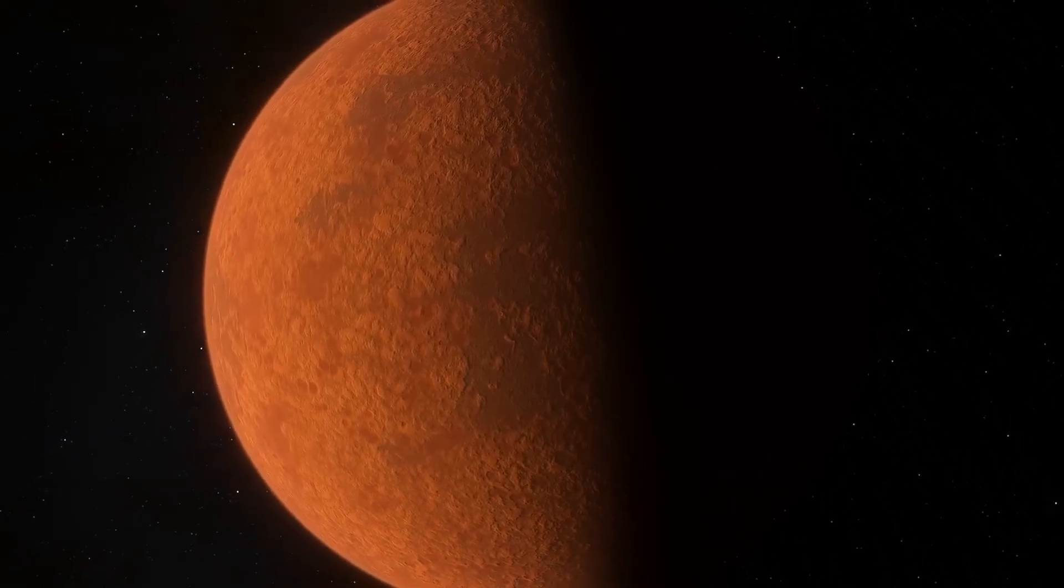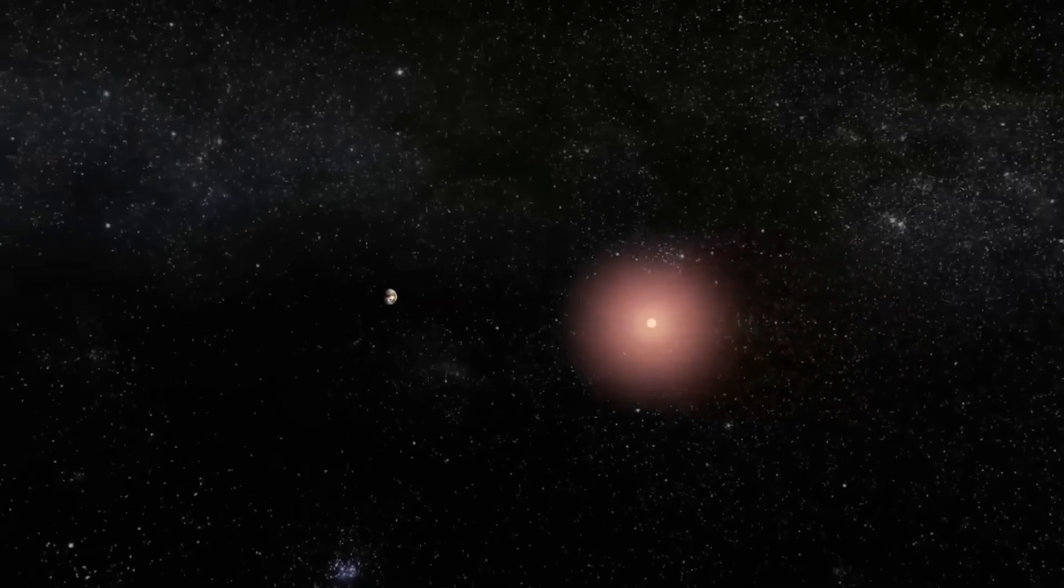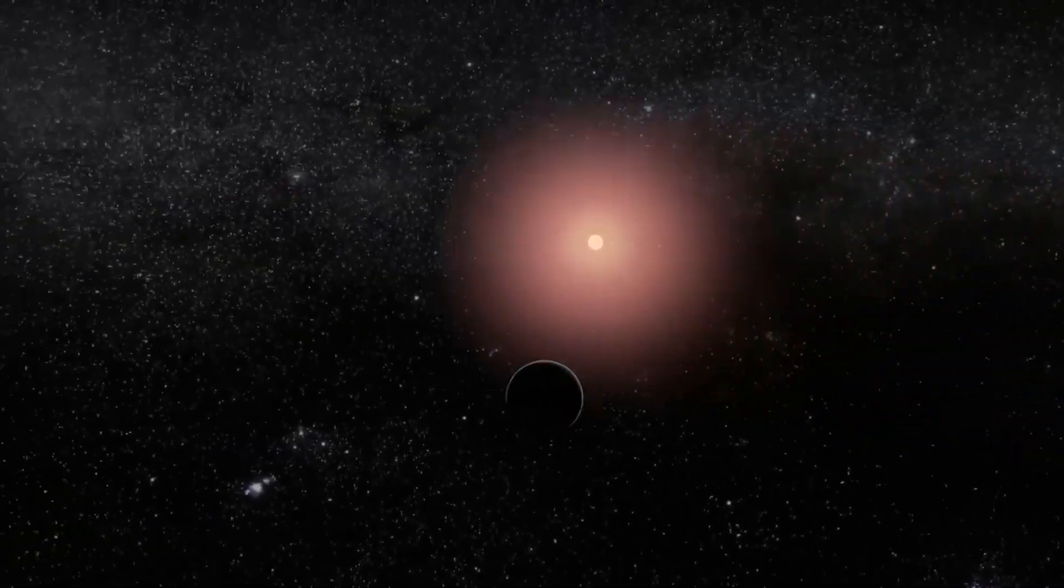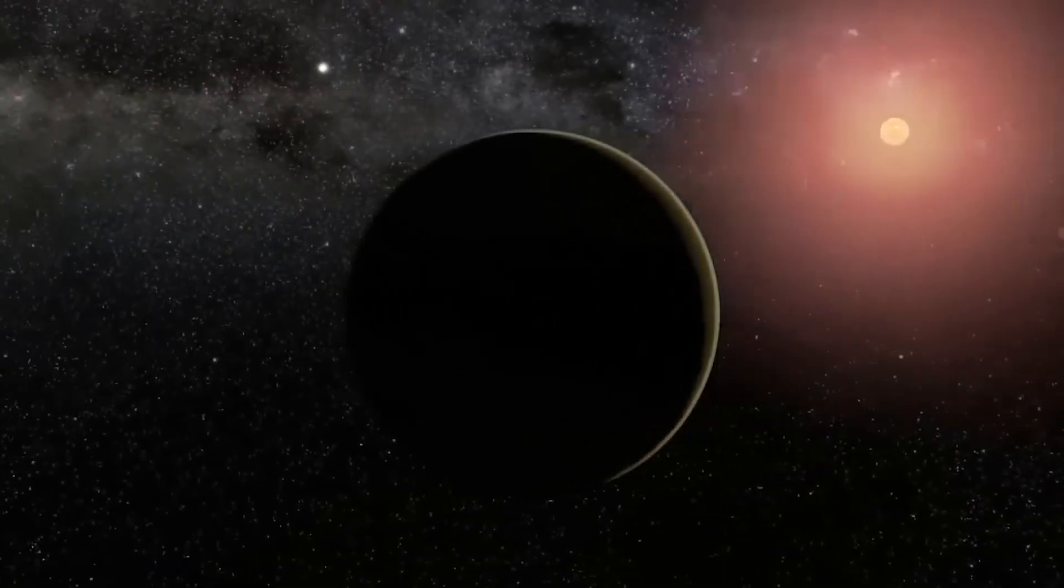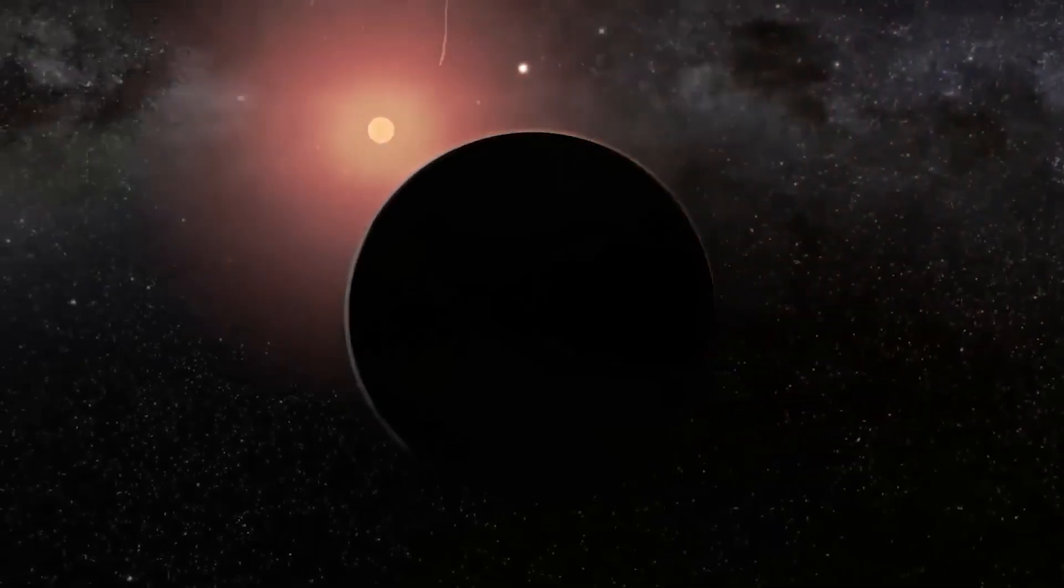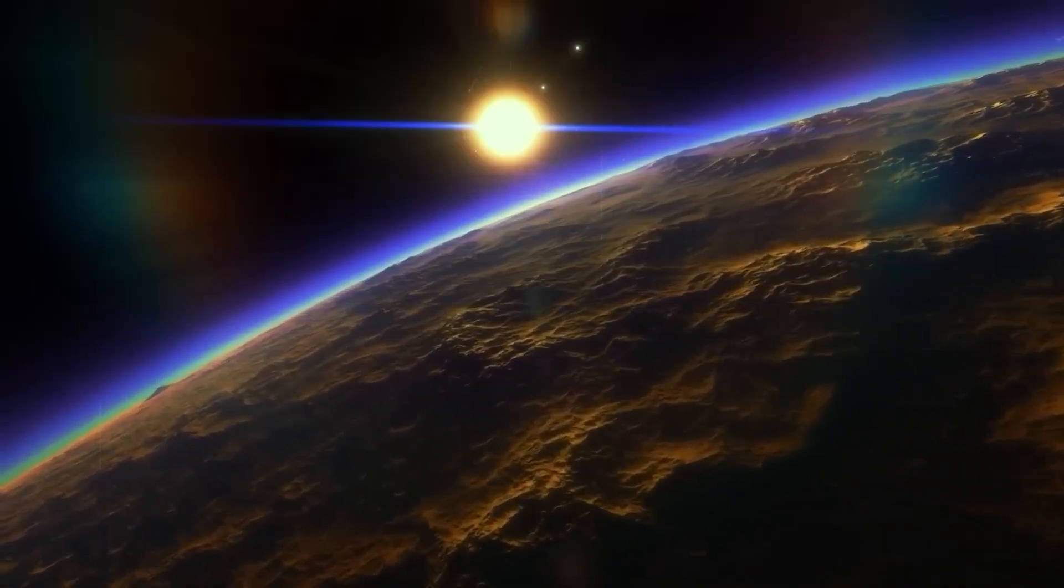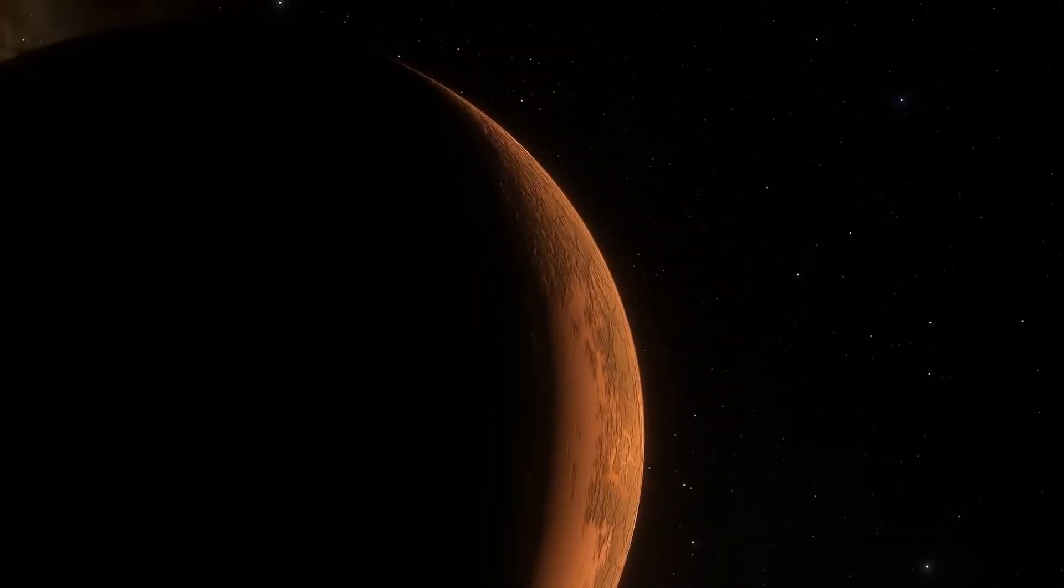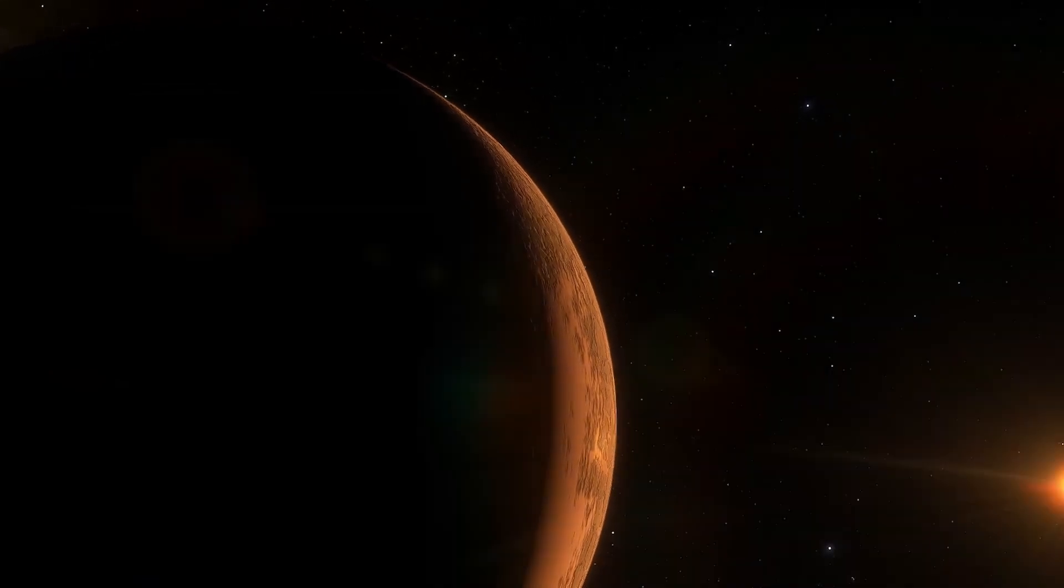Proxima b, orbiting the closest star to our solar system, has long captured the imagination of scientists and dreamers alike. But while its illuminated side has been a topic of intense study, its dark side, permanently locked in shadow, remained an enigma.